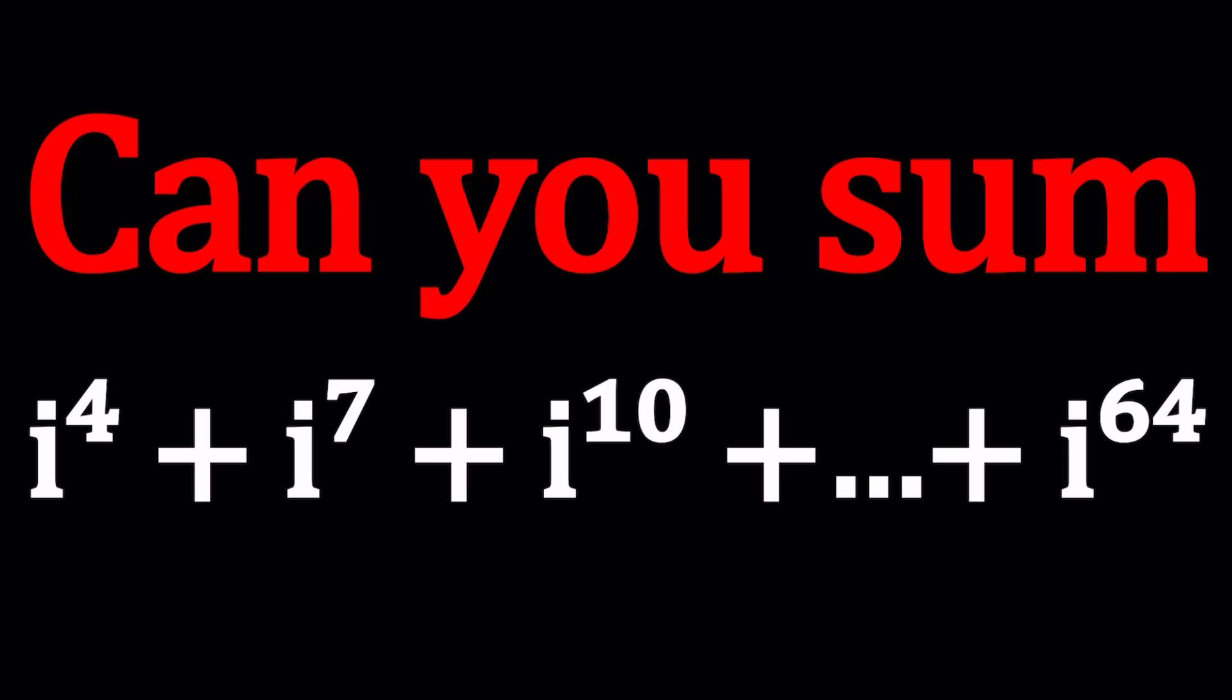So we're going to find this sum, and obviously if the rule is not explicitly stated, then there might be more than one way to express it. So that's why I wanted to say it clearly that that is the rule. In other words, the exponents are all numbers that are 1 mod 3, starting with 4 and ending with 64.